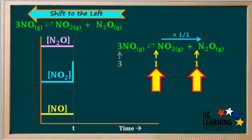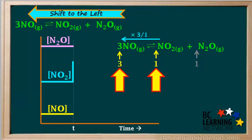The coefficients on NO₂ and N₂O are both 1, so for every mole of N₂O consumed in the shift to the left, one mole of NO₂ will also be consumed. Therefore, the concentration of N₂O will decrease at the same rate as the concentration of NO₂. Looking at NO, its coefficient is 3. This means that for every mole of NO₂ consumed in the shift to the left, three moles of NO will be produced. Therefore, the concentration of NO will go up three times as fast as the concentration of NO₂ goes down.